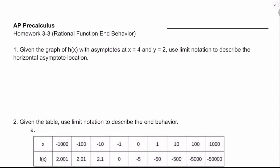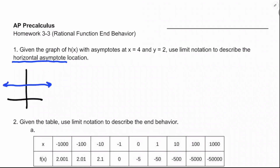Use limit notation to describe the horizontal asymptote location. The horizontal asymptote is going to be a horizontal line — the set of all points in the coordinate plane that share a y-coordinate. So we're looking for something like y equals 2, a y-equals type equation, to describe the horizontal asymptote.